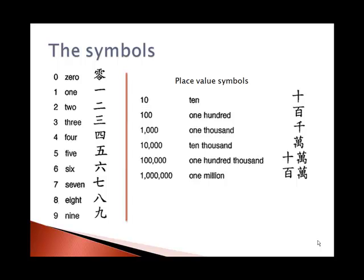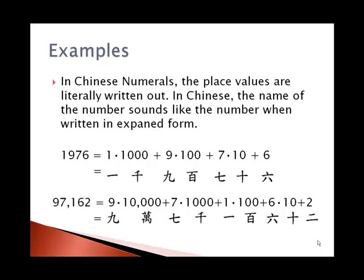In Chinese numerals, the place values are literally written out. So when you read the number in Chinese, the name of the number sounds like the number when written in expanded form. So for example, one thousand nine hundred seventy-six. An expanded form is one times a thousand, nine times a hundred, seven times ten, and six, all added up together.